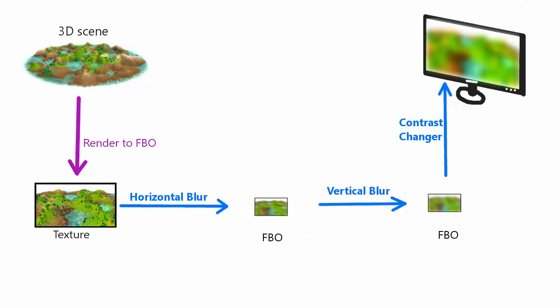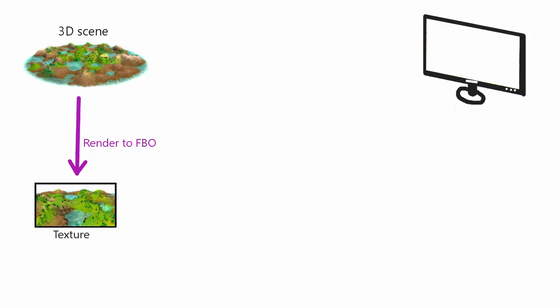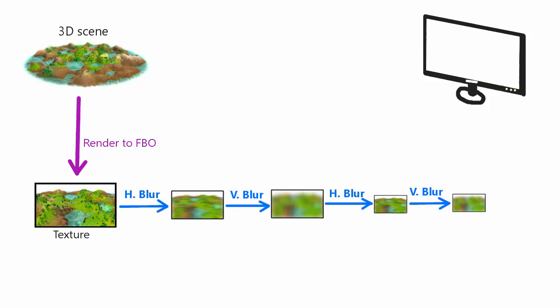Depending on what you need the blur for this might not bother you, but if you need top quality Gaussian blur, one thing you can do is carry out multiple blur stages. Instead of downscaling the texture in one go to a tiny portion of the original — which introduces a whole load of aliasing — you instead scale it down a little bit, blur that, then scale it down a little bit more, carry out the Gaussian blur, and so on. The number of stages required depends on how blurry and how high quality you want the final image to be. It's a bit more expensive, but it gets rid of the flickering and is still far more efficient than blurring the original full-size texture with a huge kernel.